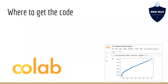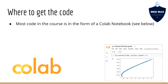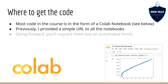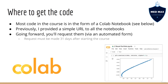In this lecture, we are going to discuss where to get the code for this course. The code mostly comes in the form of Colab notebooks. In previous courses, I've provided a simple URL where you could download the code at your leisure. But in this course, I'm going to try something new. In order to get the notebooks, you'll need to make a request by filling out a form, and you'll only be able to make this request 31 days after you started the course.